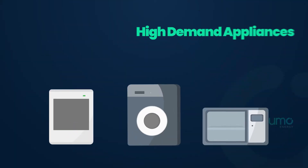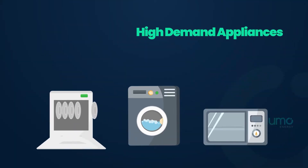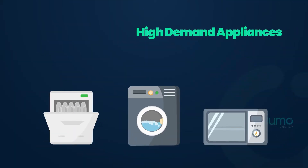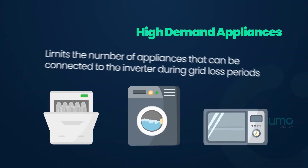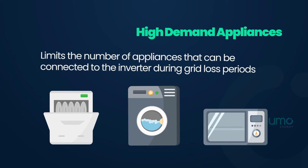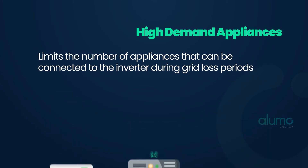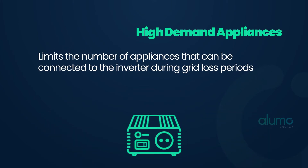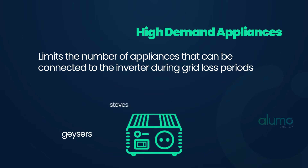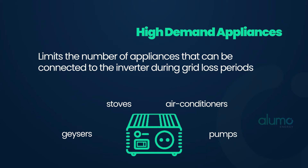The second element to consider is high demand appliances. This limits the number of appliances that can be connected to the inverter during grid loss periods. Examples would include geysers, stoves, air conditioners and pumps.